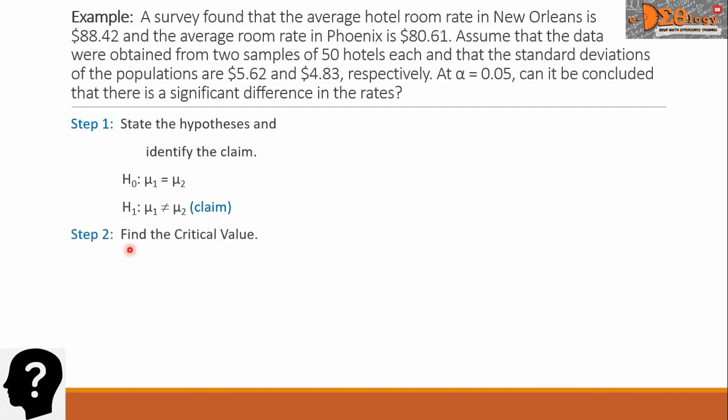Step 2. Find the critical value. At alpha equals 0.05, and at two-tailed test, this is denoted by the not equal sign in the alternative hypothesis.